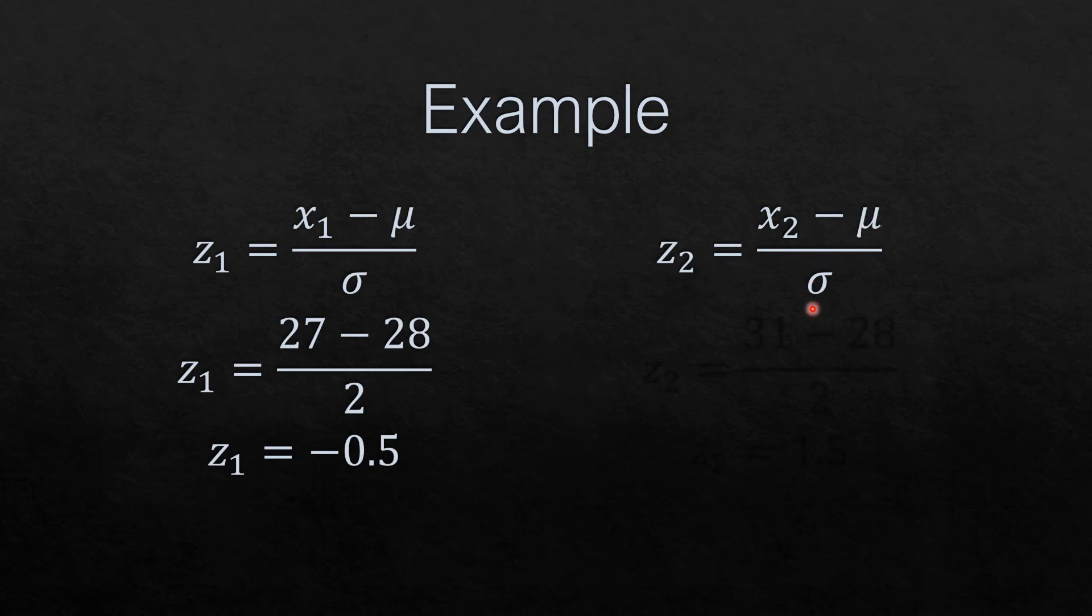For Z sub 2, X sub 2 minus mu all over standard deviation. For X sub 2, we have 31 minus the mean 28, all over 2, which is the standard deviation. We have 1.5. These two are the corresponding Z-scores of 27 and 31.